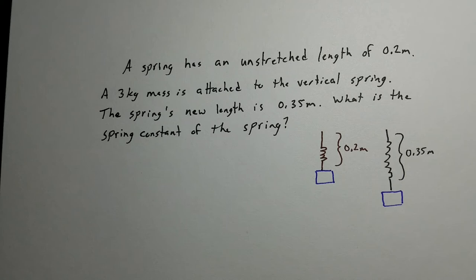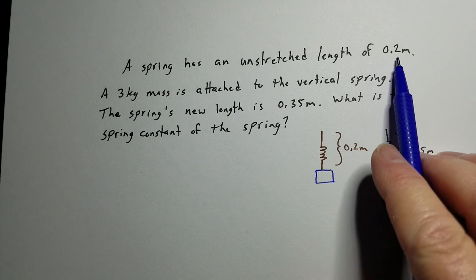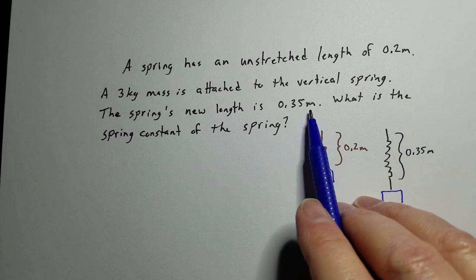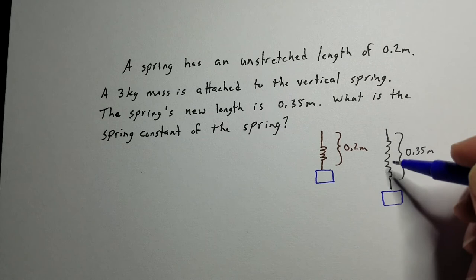Let's take a look at another scenario. In this case, we have an unstretched spring that is 0.2 meters, sort of like in the introduction. We put a 3 kilogram mass on it, and now it has a length of 0.35 meters. We want to know the spring constant of the spring.